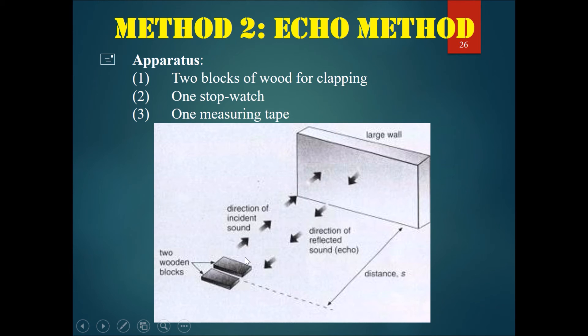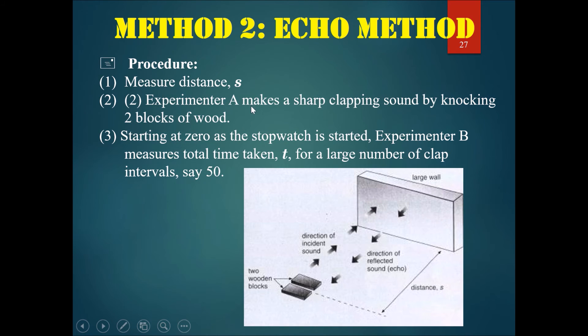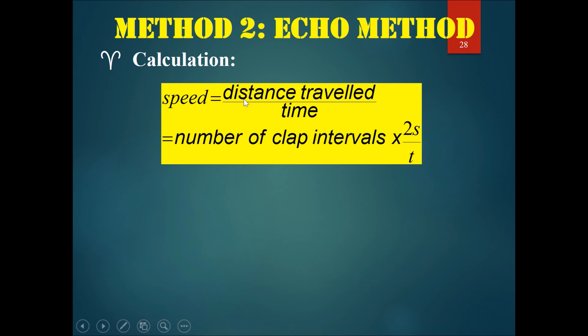In summary, firstly we measure the distance s, and then the experimenter makes a sharp clapping sound by knocking the two blocks of wood. Then another guy, standing maybe here, would start the stopwatch at one of the claps. This guy of course keeps clapping, and then once the guy that is using the stopwatch measures the time taken for 50 claps, he presses stop.